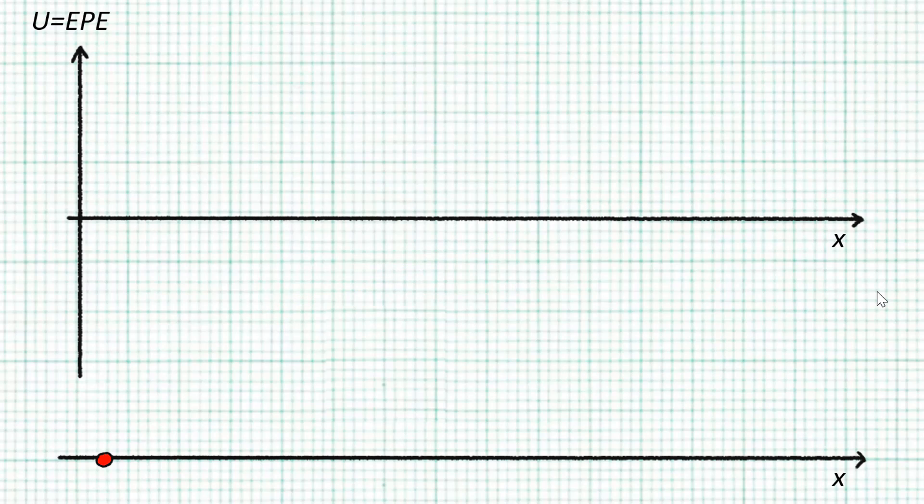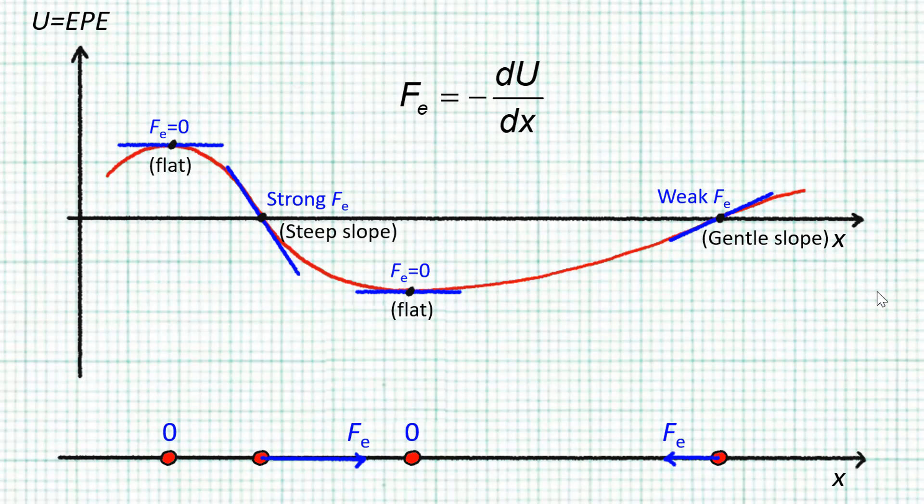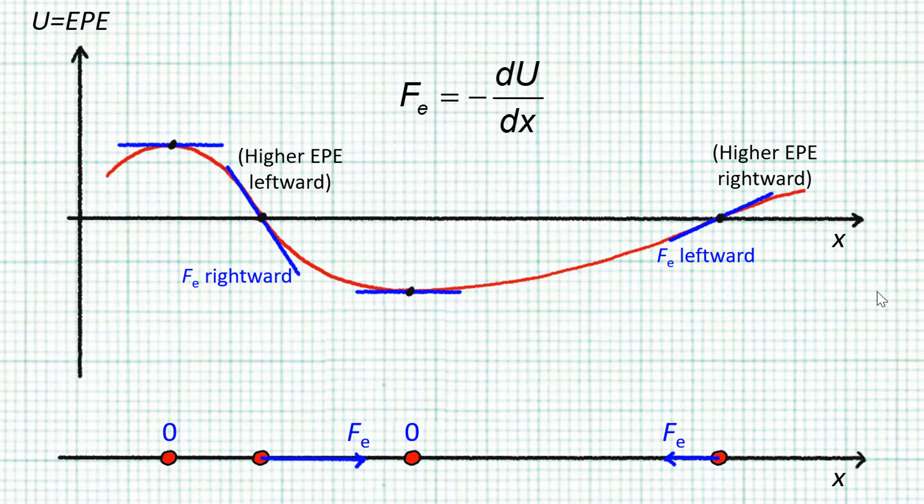If we plot on the graph how the EPE of a charge varies along this line, we can figure out how the electric force acting on this charge varies along this line. Remember, F is negative dU/dx, so the steepness of the slope tells us the magnitude of the electric force. And the direction in which the EPE is decreasing is the direction of the electric force.